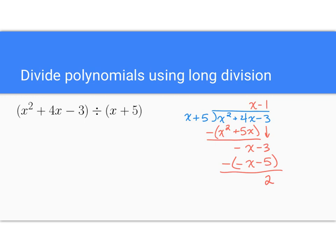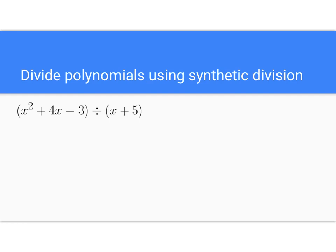Subtract this, and we get 2. So our answer then, we have a remainder. That's what the 2 is. So what we do with the remainder, we say x minus 1 plus 2 over x plus 5. And that's our answer using long division. You can always check your answer by multiplying this by x plus 5. You should get x squared plus 4x minus 3.